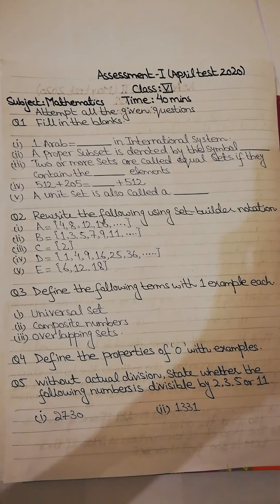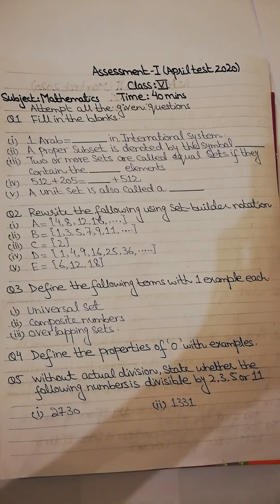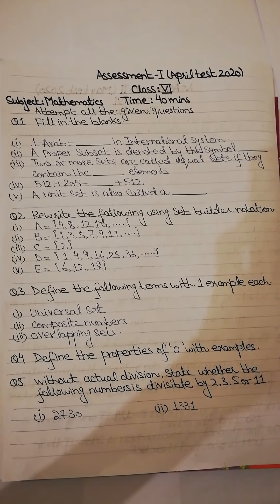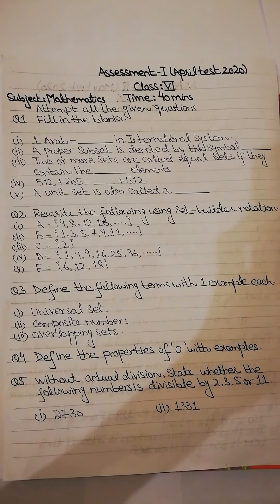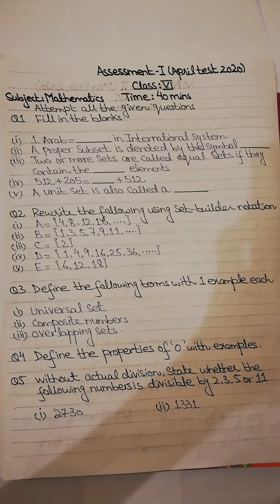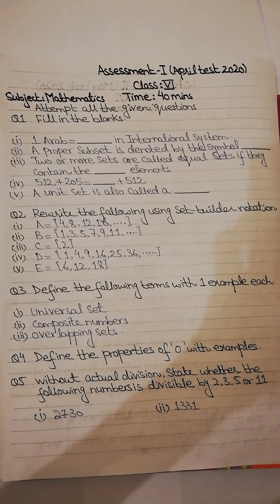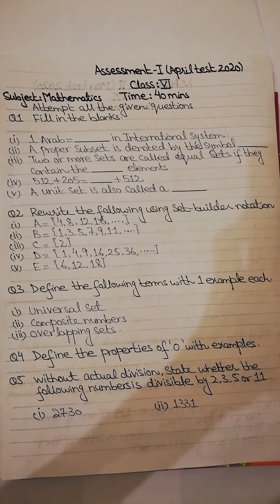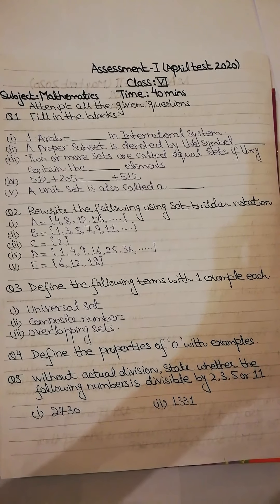Now question number 2 is rewrite the following using set builder notation. Now you have here some sets given and you have to write it in set builder notation. First one is set A, set in which elements are given 4, 8, 12, 16 and so on. Second, set B, set of elements are 1, 3, 5, 7, 9, 11 and so on.